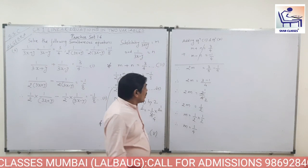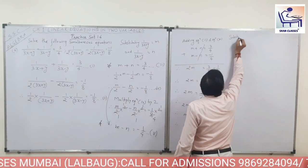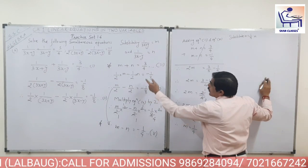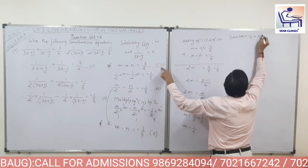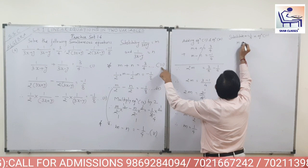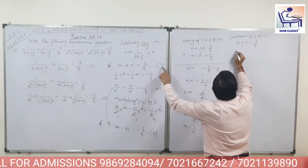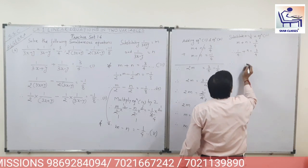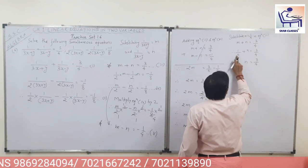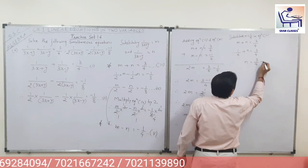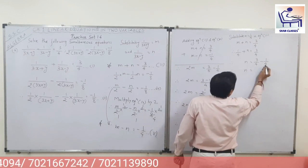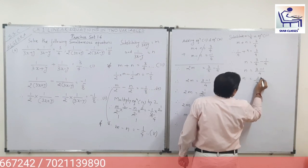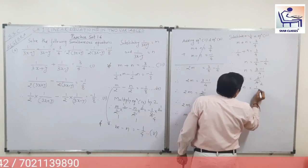Now we substitute M is equal to 1 upon 4 in equation 3. So M plus N is equal to 3 upon 4: 1 upon 4 plus N is equal to 3 upon 4, so N is equal to 3 upon 4 minus 1 upon 4. Denominators are same, so 3 minus 1 upon 4 is 2 upon 4 which is 1 upon 2. So N is equal to 1 upon 2.